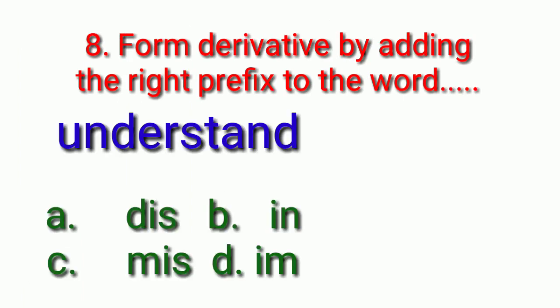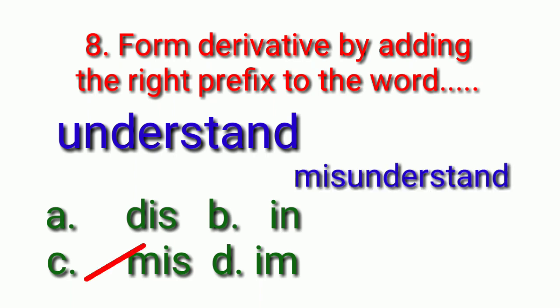Eighth one. Form a derivative by adding the right prefix to the word understand. So, prefix you should do. Your options are dis, in, miss, im. Countdown starts. So, you should write the prefix for understand. Answer is miss, misunderstand.